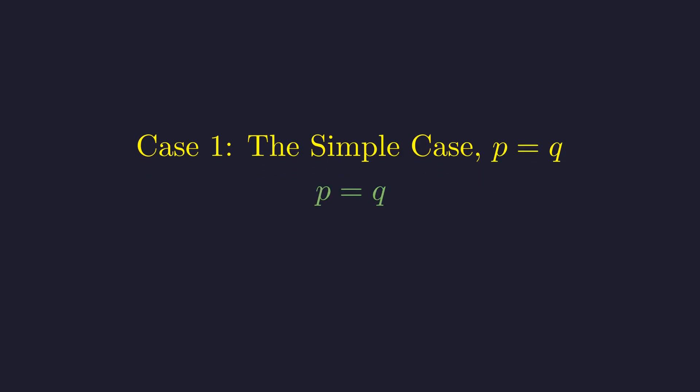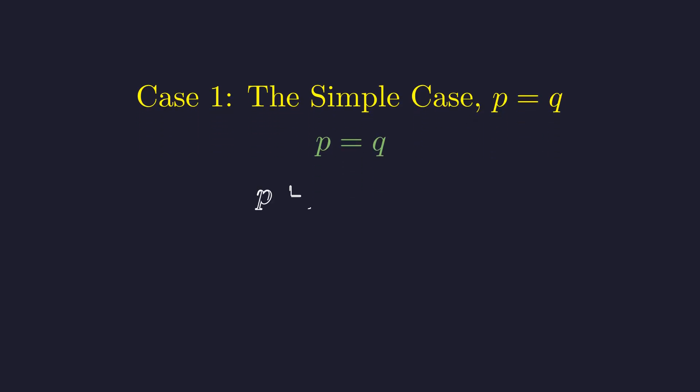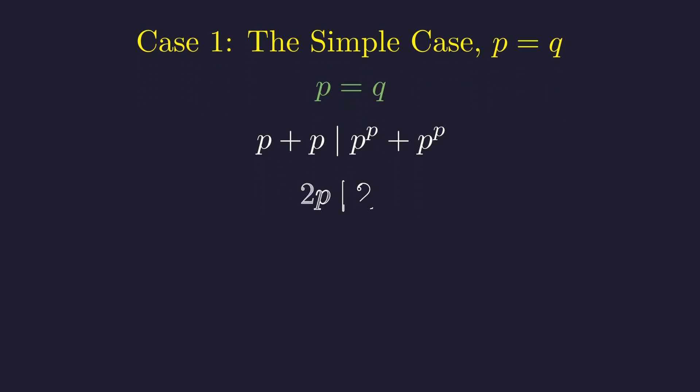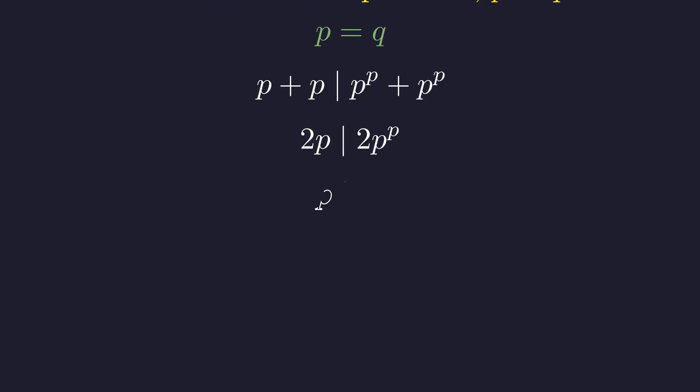We'll assume p is equal to q. The statement now becomes p plus p must divide p to the power of p plus p to the power of p. Simplifying both sides gives us a much clearer picture. 2p must divide 2 times p to the power of p. And this leaves us with the simple statement: p must divide p to the power of p.